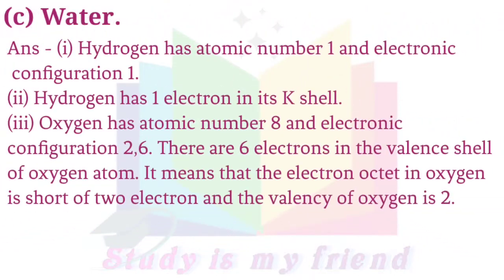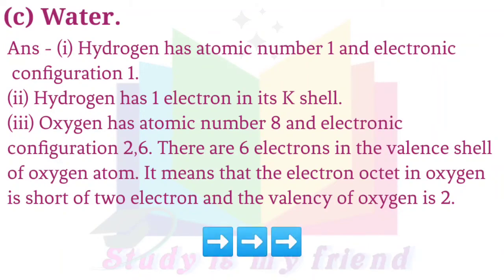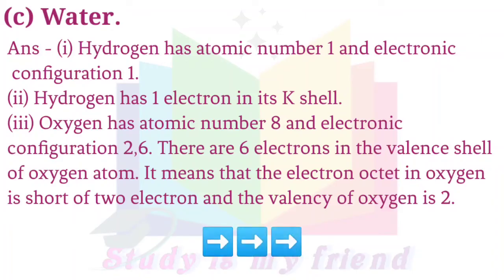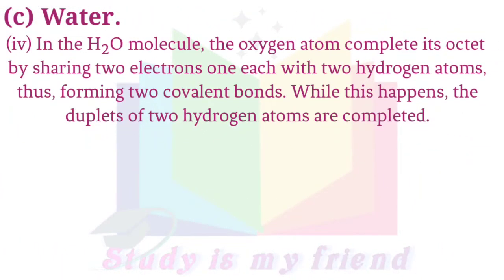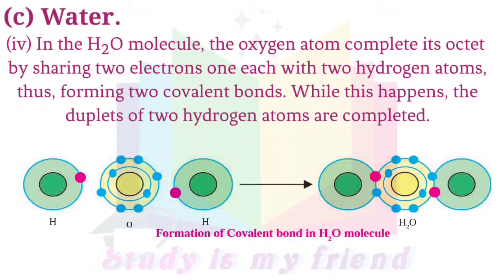C. Water. Answer: Hydrogen has atomic number 1 and electronic configuration 1 — it has 1 electron in its K shell. Oxygen has atomic number 8 and electronic configuration 2, 6. There are 6 electrons in the valence shell of oxygen atom. The electron octet in oxygen is short of 2 electrons and the valency of oxygen is 2. In the H₂O molecule, the oxygen atom completes its octet by sharing 2 electrons, one each with 2 hydrogen atoms, thus forming 2 covalent bonds. While this happens, the duplets of the 2 hydrogen atoms are completed.